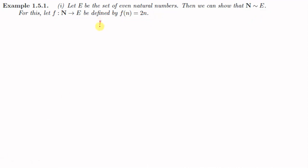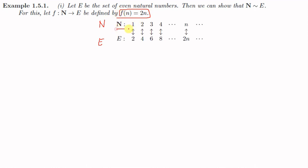We define a function f from N to E by f(n) = 2n. Listing the elements: N = {1, 2, 3, 4, 5, 6, …, n, …} and E = {2, 4, 6, 8, …, 2n, …}. Then f(1) = 2, f(2) = 4, f(3) = 6, f(4) = 8, and in general f(n) = 2n.